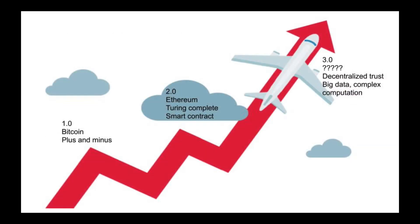Blockchain has a short history that started about 10 years ago. It can be split into three stages, commonly called Blockchain 1.0, 2.0, and upcoming 3.0. The defining project of Blockchain 1.0 is Bitcoin. Bitcoin marks the first time in human history that decentralized trust is established — truly a revolution.